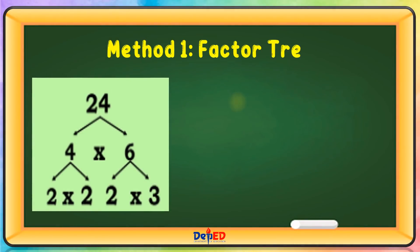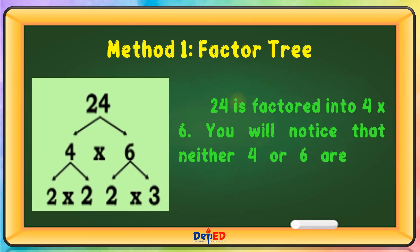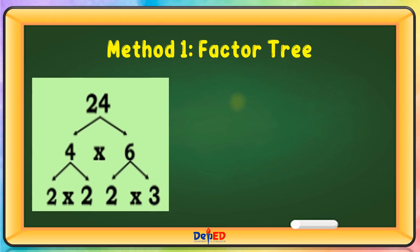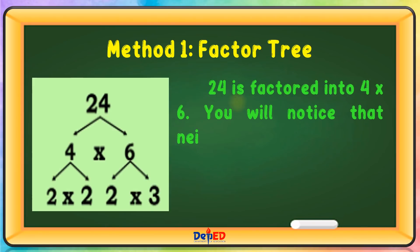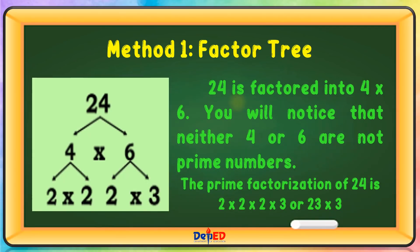Method 1: Factor Tree. 24 is factored into 4 times 6. You will notice that neither 4 nor 6 are prime numbers. The prime factorization of 24 is 2 times 2 times 2 times 3, or 2³ times 3.